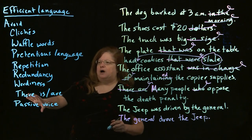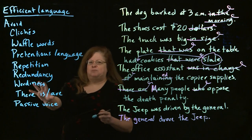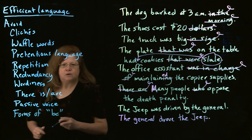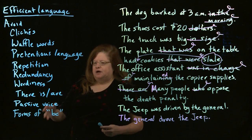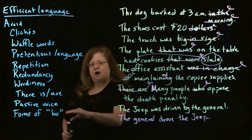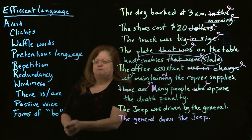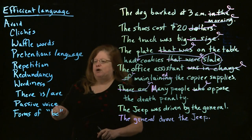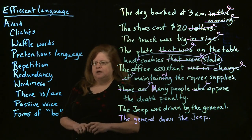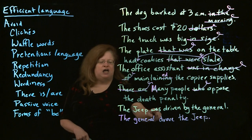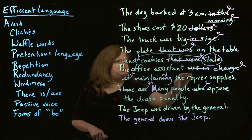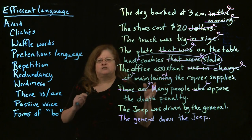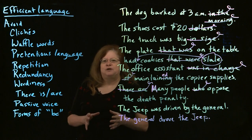These last few examples all reflect another type of inefficient language: anything that uses forms of the verb 'be' — is, am, are, was, were. We're looking for active sentences, and 'be' is not an action verb; it's a state-of-being verb. When you use 'be,' you're taking action out of your sentences. You can see this in the passive voice 'was,' in 'the office assistant was in charge,' and in 'the plate that was on the table.' Those sentences are pudgy or out of shape — they need to trim down.